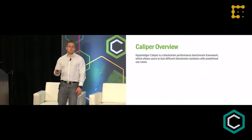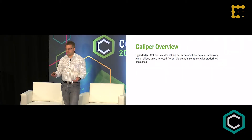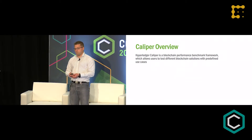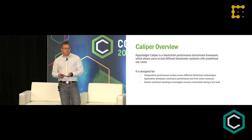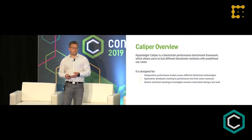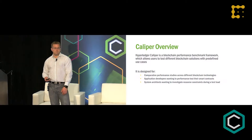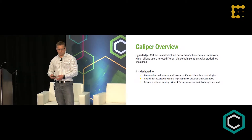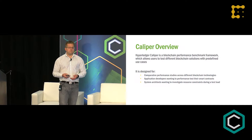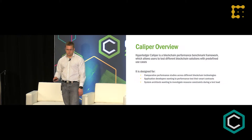Hyperledger Caliper is a performance benchmark framework for blockchains and distributed ledgers. We're looking at testing different blockchain solutions with predefined use cases. We've designed this specifically for comparative performance studies across different blockchain technologies. This is for application developers wanting to performance test their smart contracts — they're looking at throughput and latencies — and also for system architects who want to investigate resource constraints during a simulated test load.